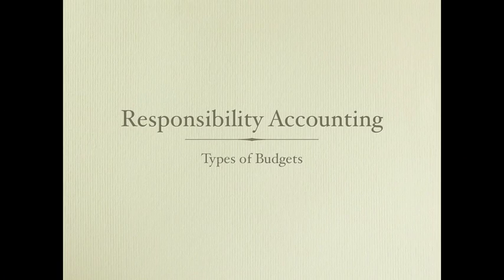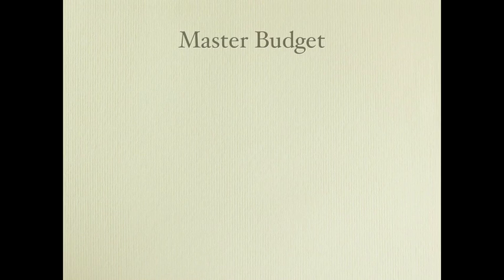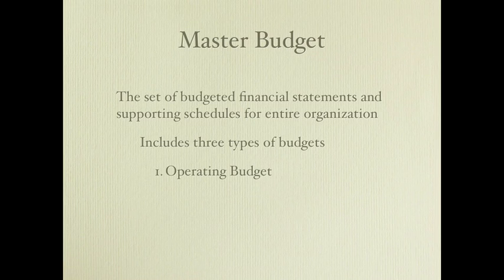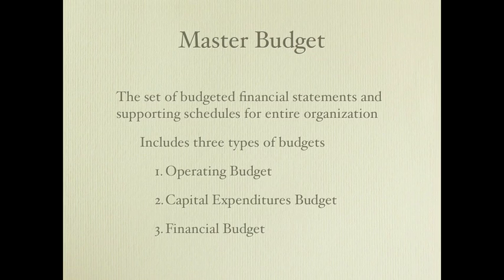This is part one in our Responsibility Accounting series, where we'll be discussing types of budgets. The master budget is a set of budgeted financial statements and supporting schedules for an organization, and it includes three types of budgets: the operating budget, the capital expenditures budget, and the financial budgets. We're going to look at each one and what makes up each type.